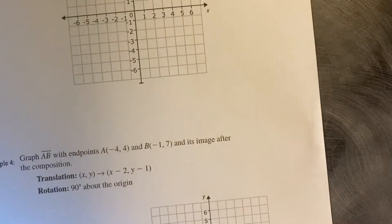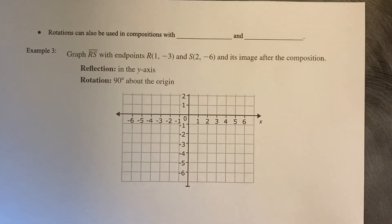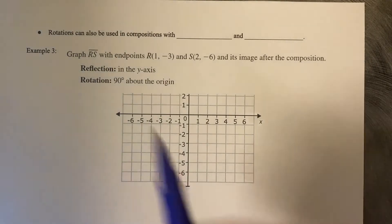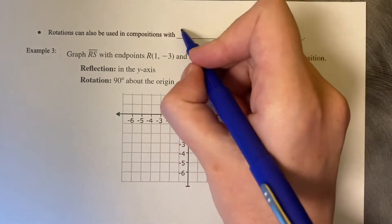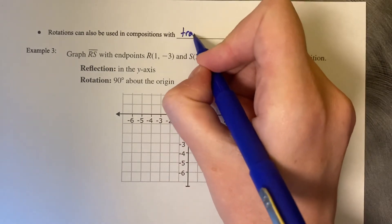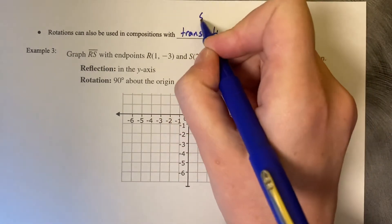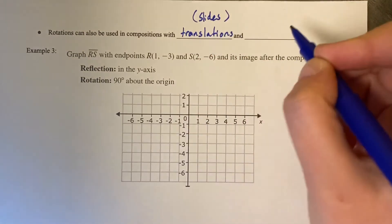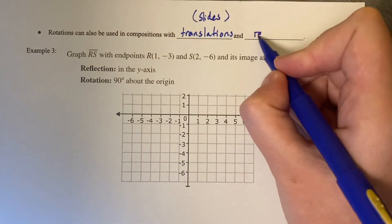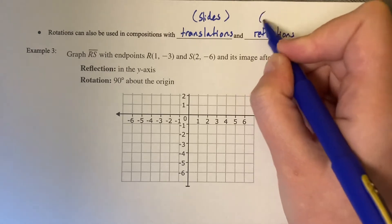You can also make a composition of transformations with rotations. Rotations can be used in compositions with translations (or slides) and reflections, which are the mirror transformations.